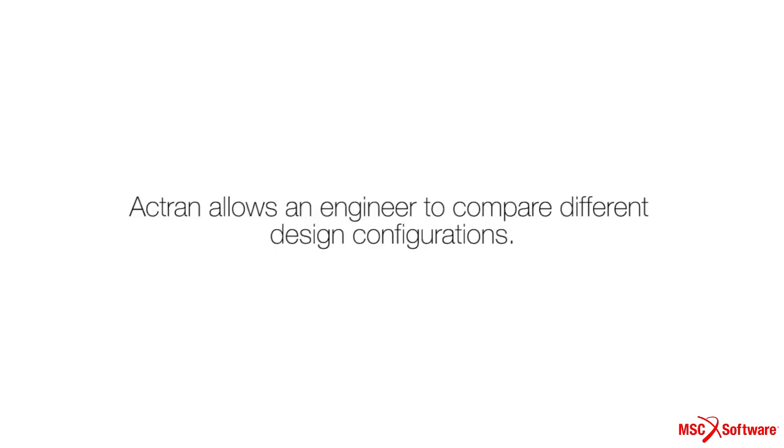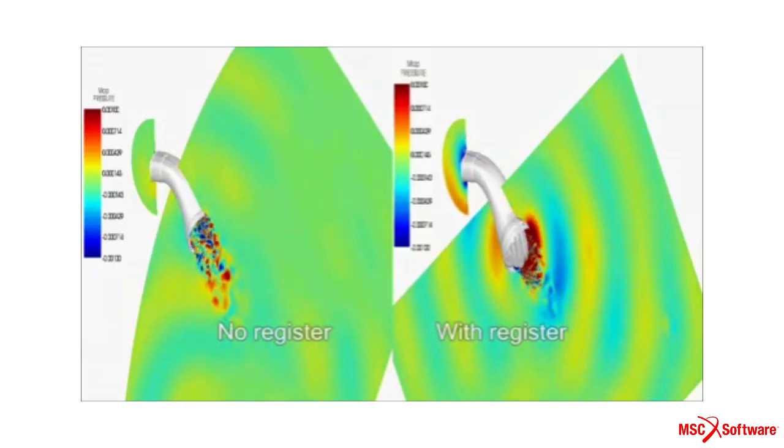ACTRAN allows an engineer to compare different design configurations, such as this example showing the difference in noise with and without a register at the end of the duct.